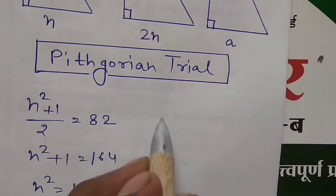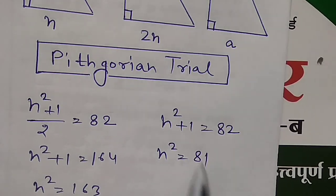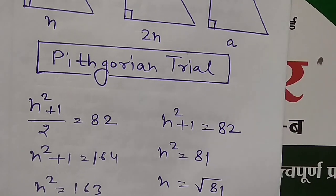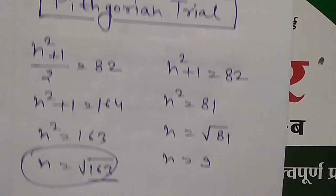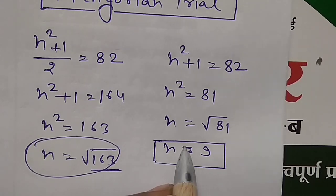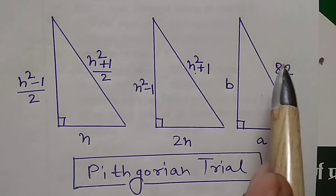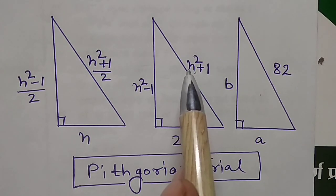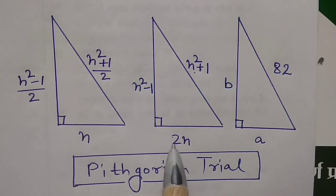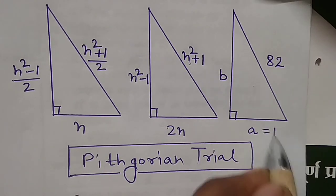Setting n² + 1 = 82 gives n² = 81, so n = 9. Therefore, with n = 9, the side a = n × 2 = 18, so a is equal to 18.